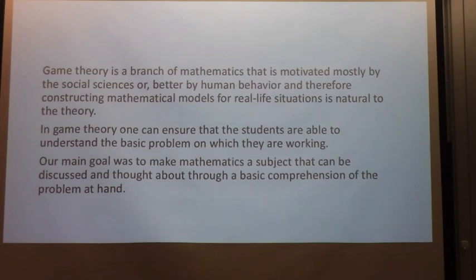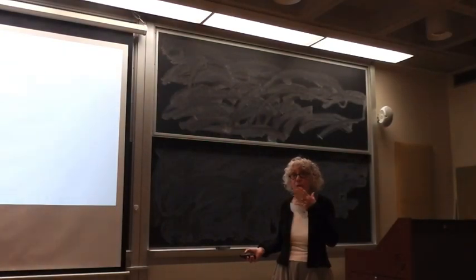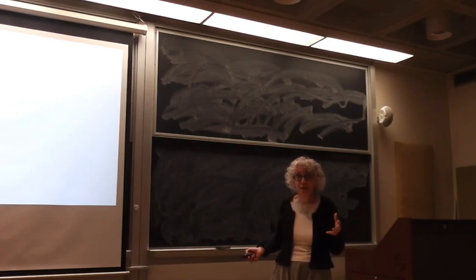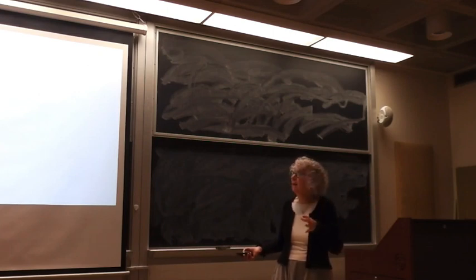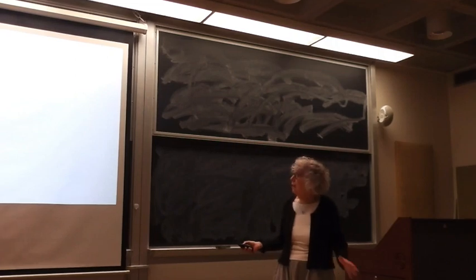Our main goal was to make mathematics a subject that can be discussed and sorted out through a basic comprehension of the problem at hand. It was written something about the interdisciplinary of the game theory. I'm coming from the center of rationality at the university which is unique in the world. What is very special is the core of the center is the mathematician, the game theorist. But around them, there are people from the law school, economics, biology, ecology, psychology, philosophy, you name it. So it's proper interdisciplinary and there are many papers that are written in the center because of common work between the members of the center.